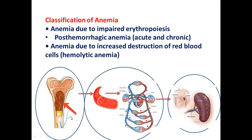Anemia due to impaired erythropoiesis develops because of decreased synthesis of erythrocytes in the bone marrow. Why can synthesis decrease? The first reason may be a decrease in the amount of stem cells, as in aplastic anemia. The second reason may be deficiency of sources for erythropoiesis, like deficiency of iron, vitamin B12, or folic acid.